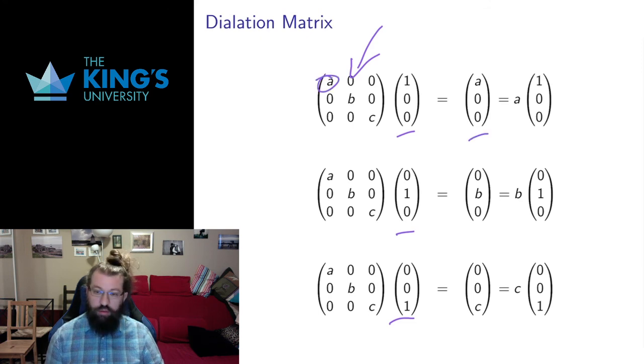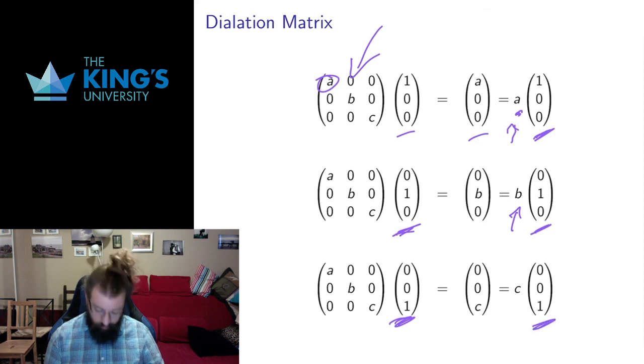So (1,0,0) goes to (a,0,0), which is the same as scaling (1,0,0) by a. So this is an eigenvector with eigenvalue a. Likewise, the second axis vector is an eigenvector with eigenvalue b, and the third axis vector is an eigenvector with eigenvalue c.